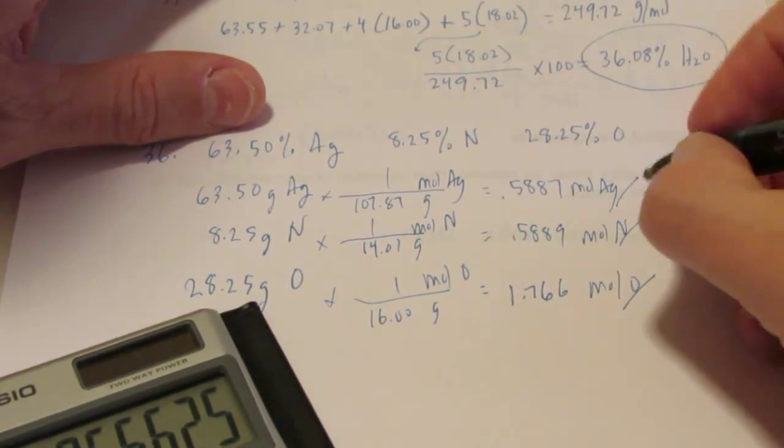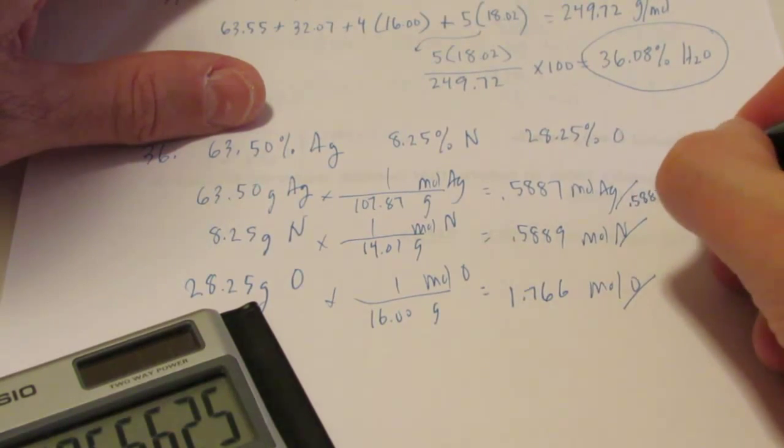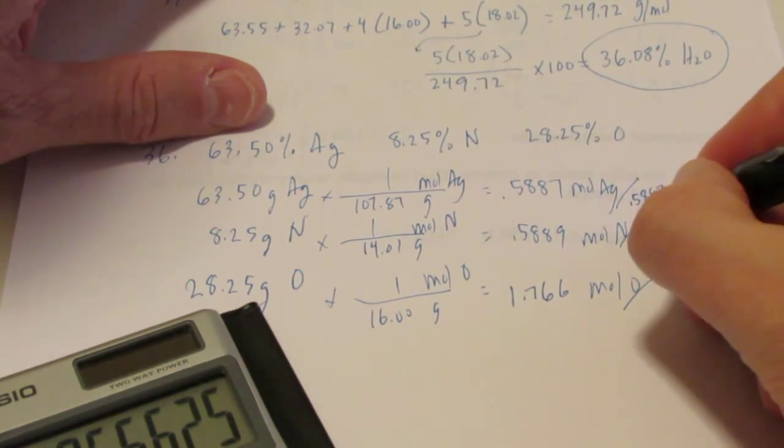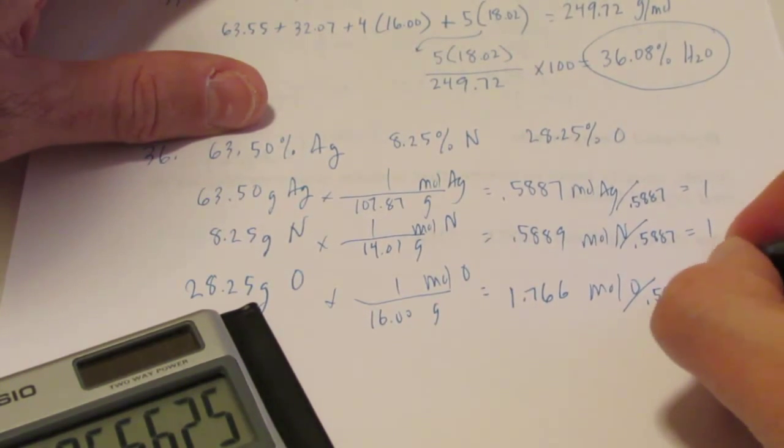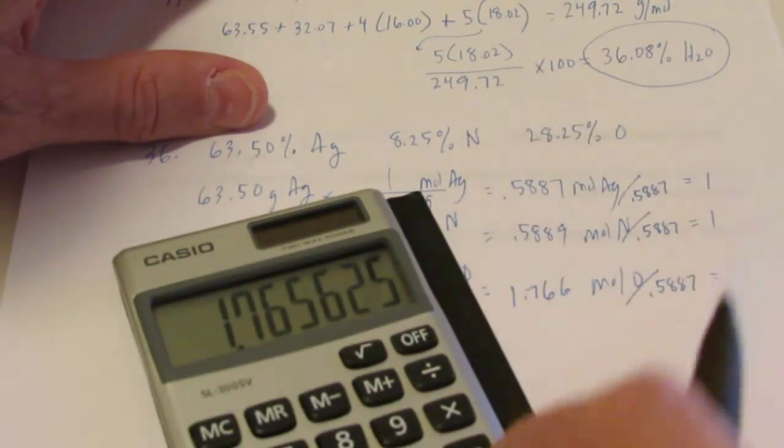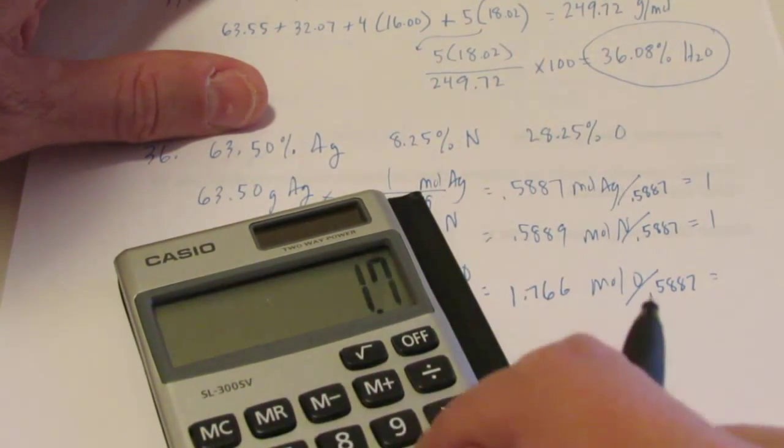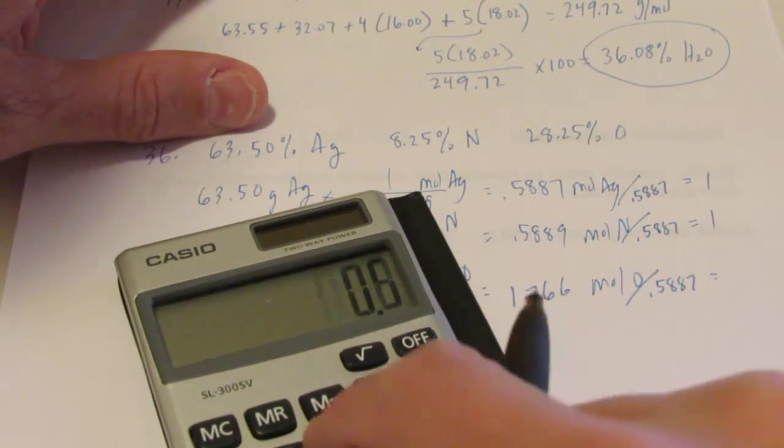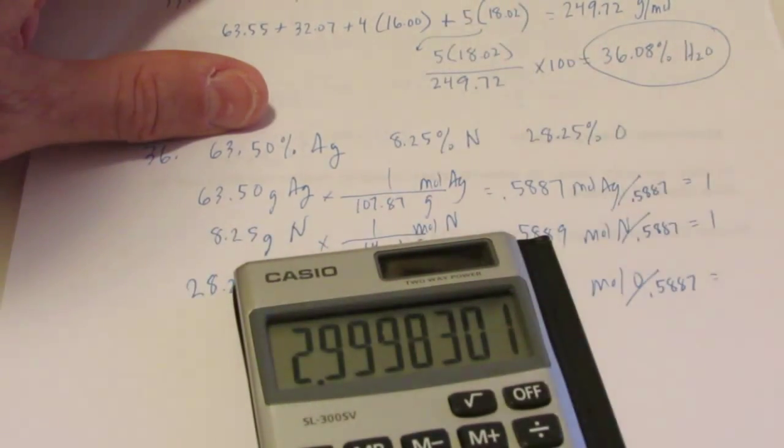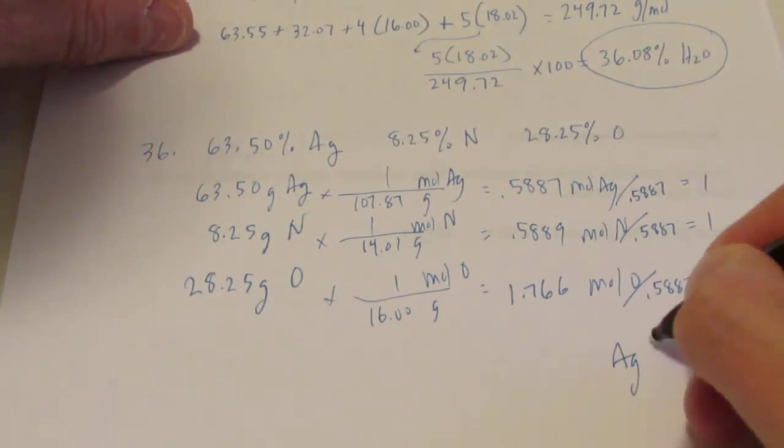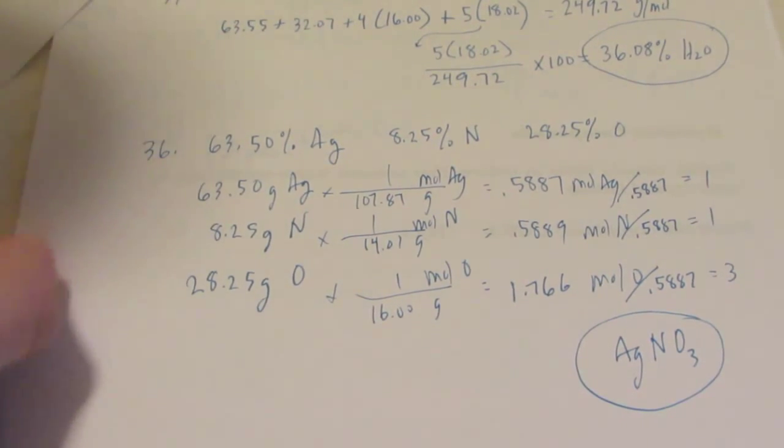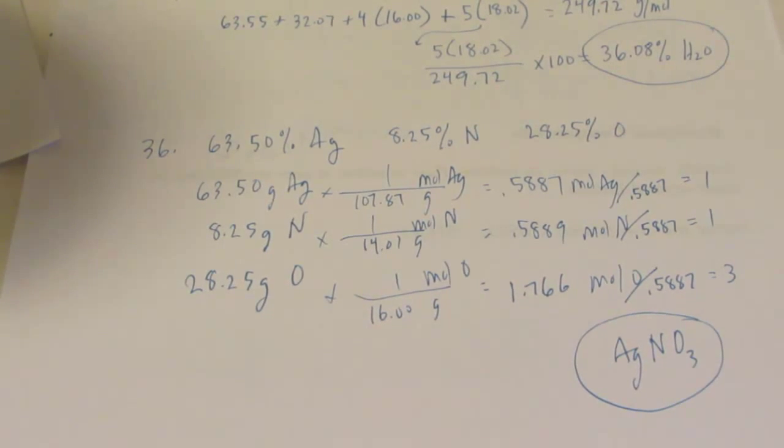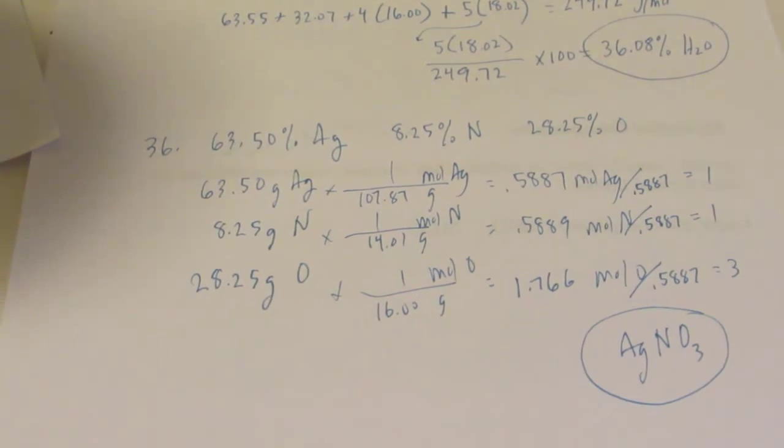Now the last step is dividing by the lowest number, 0.5887. So that's a 1 for silver, 0.5889 divided by 0.5887 will be a 1 for nitrogen. Can you do that one in your head? Let's see. 1.766 divided by 0.5887 is pretty close to 3, isn't it? 3. So we have AgNO3. Voila. There is your empirical formula between silver, nitrogen, and oxygen.